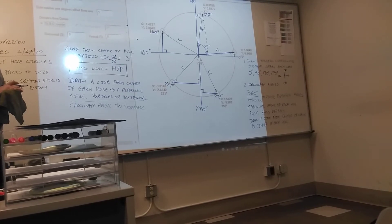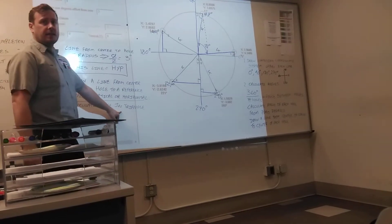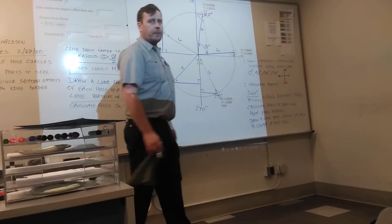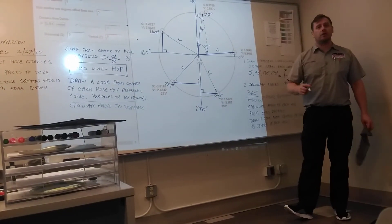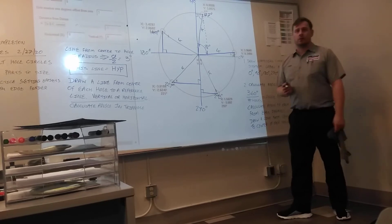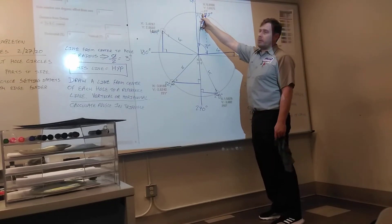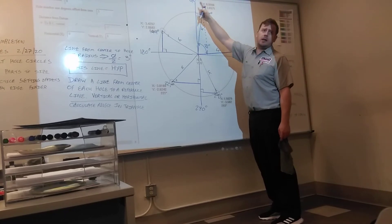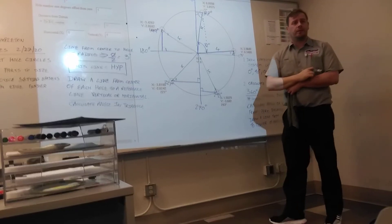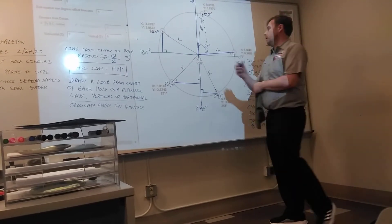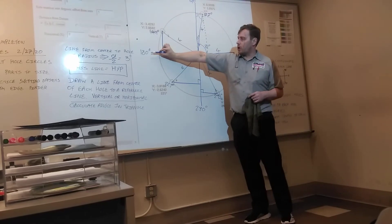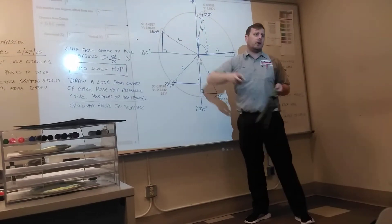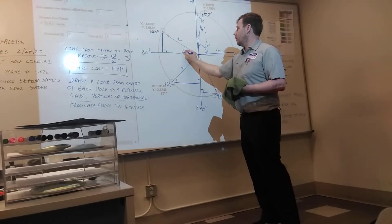So draw a line from the center of each hole, either vertically or horizontally, to one of the reference lines that we created in the first step. That forms a right-angled triangle. Now we just got to calculate the angle inside that triangle. First you got to label your sides, hypotenuse, and opposite. You have the reference angle. So we went from this line to this line. So 90 minus 77 gives you 13. Hole four. We got 180 and 149. 31 degrees.